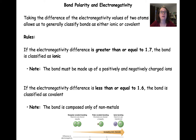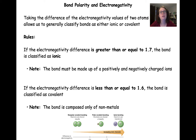In the past we have identified types of bonds by looking at the elements that are involved in making them. A compound that has a metal and a non-metal we say is ionic, and a molecule that has two non-metals we would say is covalent. We can also use electronegativity values of the two atoms in a bond to help us classify bonds as either ionic or covalent.